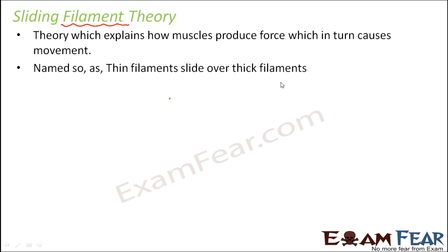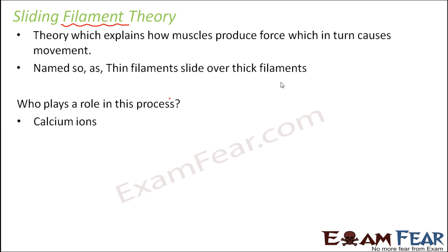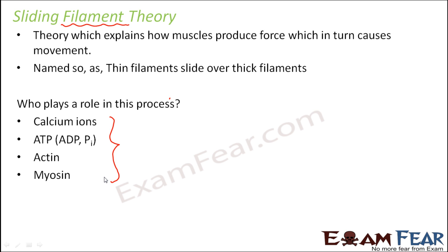Who plays a role in this process of muscle contraction? Calcium ions play a very important role — they are the main initiator of this process. ATP, which is adenosine triphosphate, made up of adenosine diphosphate and inorganic phosphate. Actin and myosin. These are the main lead actors in the sliding filament theory, which explains the process of muscle contraction.